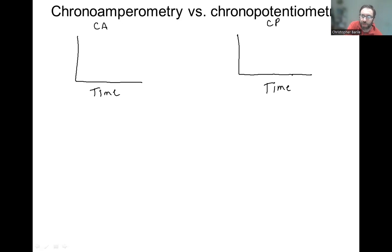Amperometry - metri just means measuring, ampia means measuring amps. So amps is a unit of current, so you're measuring current versus time. So maybe get something like this.